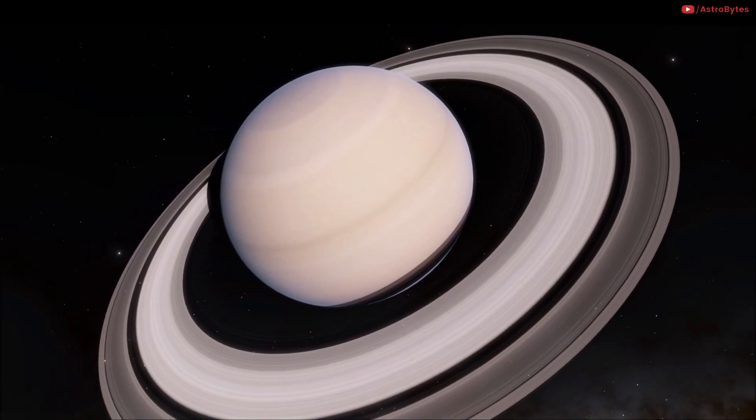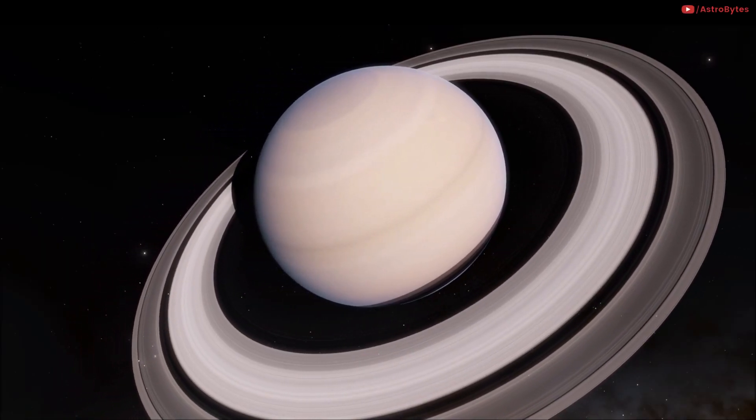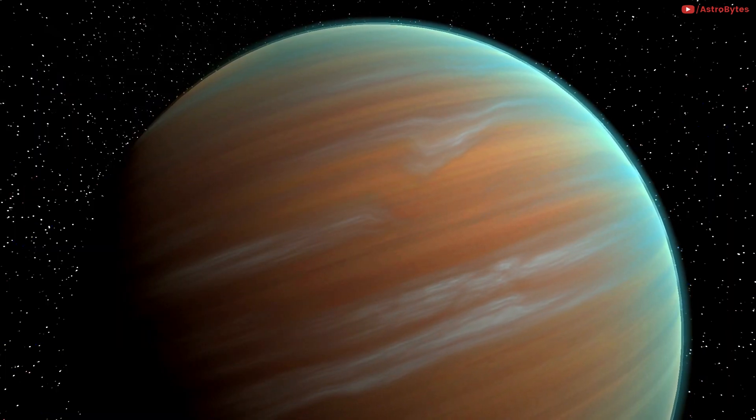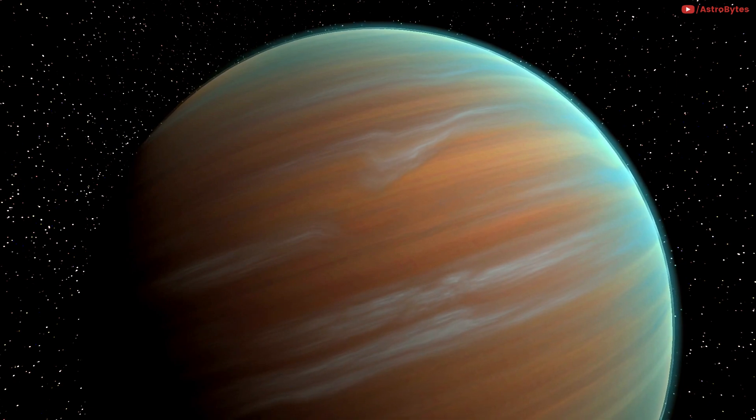Saturn is the sixth planet from the Sun and the second largest planet in our solar system. Like fellow gas giant Jupiter, Saturn is a massive ball made mostly of hydrogen and helium.